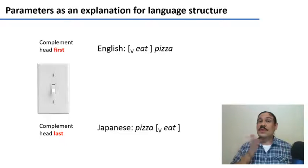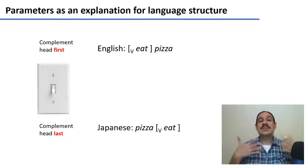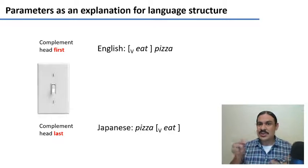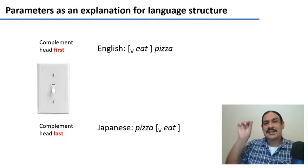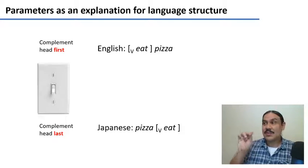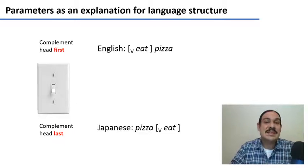Let's go back to a couple of videos ago. We studied a concept called a parameter, which is something in a language that you can set in one direction or the other, and this is going to have repercussions for the structure of a language.